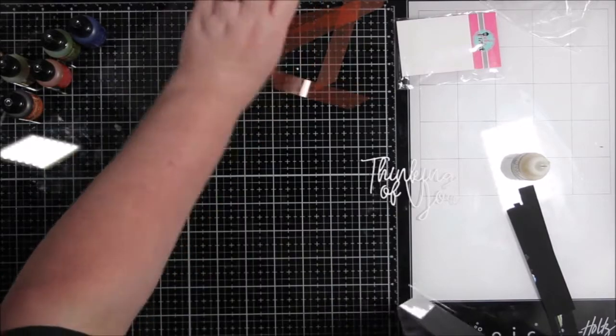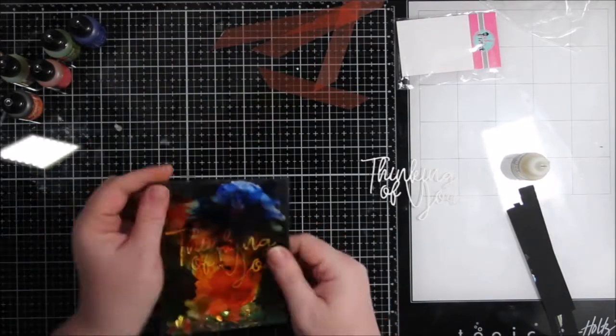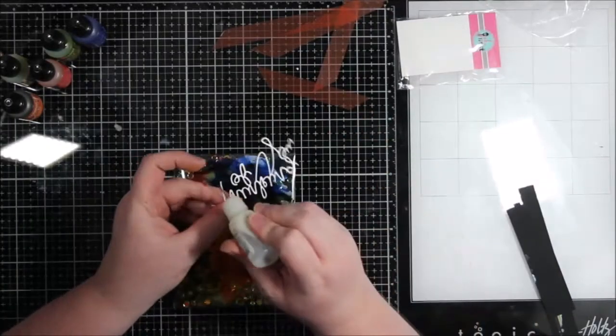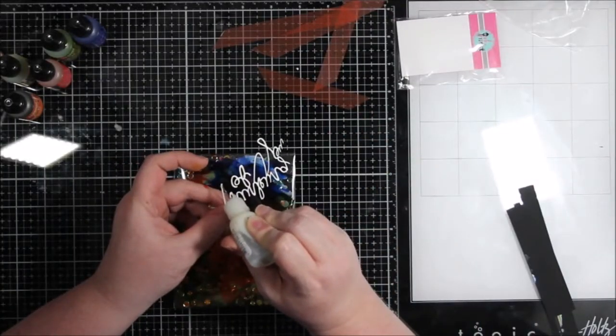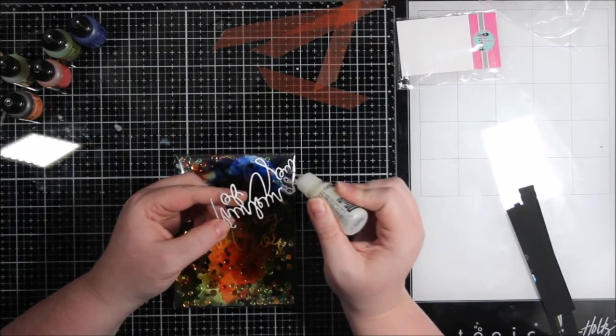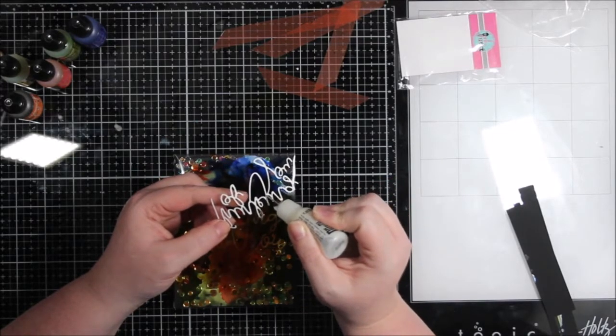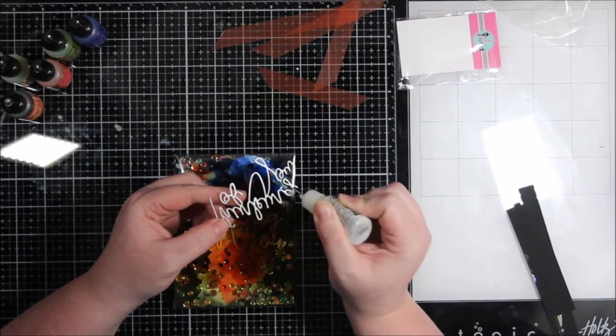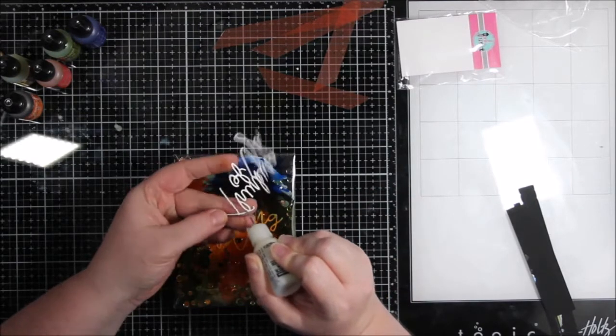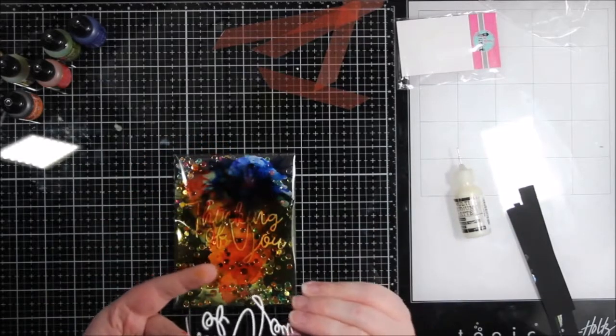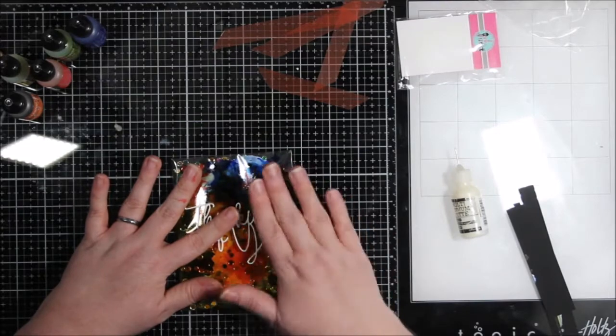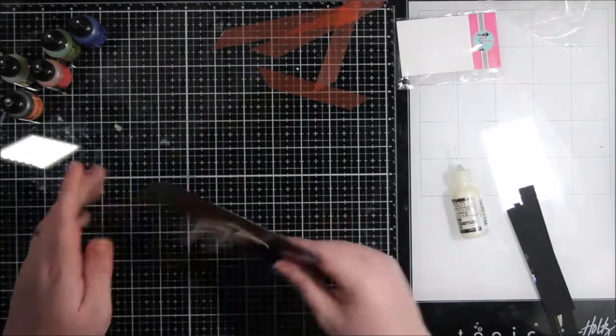And then once I had all the little pieces in there, I just folded up that fourth flap and now it's a full shaker. Now you can't really read that sentiment, but that's where I want the sentiment to be. So I had a third cut out here and I'm going to go ahead and adhere that over top of the shaker panel. This card is flat. It's as flat as flat can be. I mean, there's three little layers of the thinking of you die cut, but essentially this will mail just fine. It's very flat.